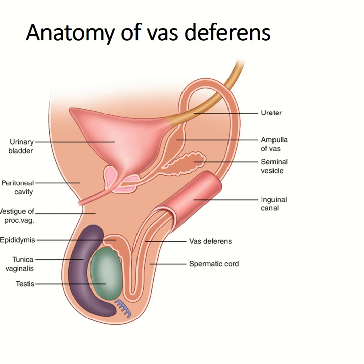Anatomy of the vas deferens. The vas deferens is a musculature that transports sperm from the epididymis to the urethra during ejaculation.